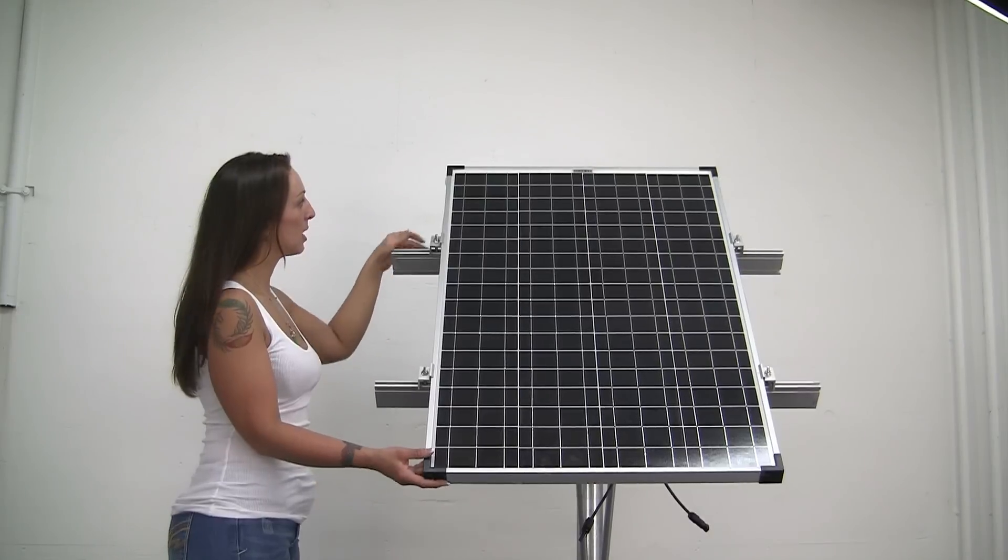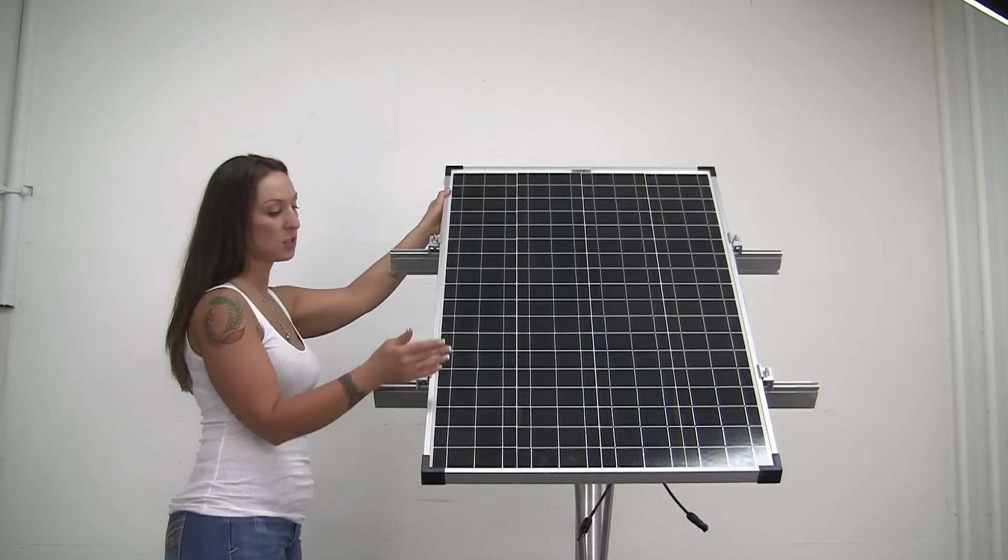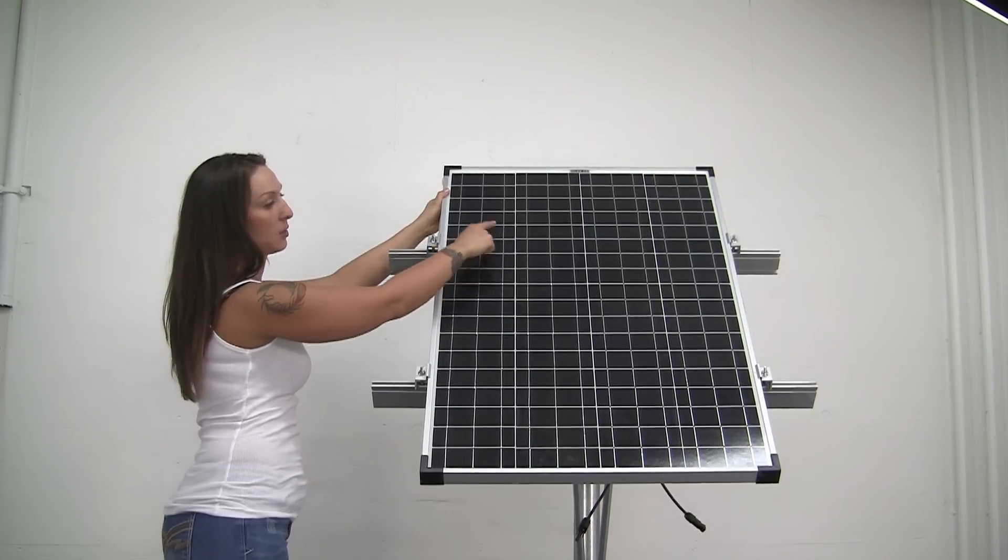Okay guys, when you're mounting up your solar panel, the easiest way to get it all lined up on there is just to use the actual lines on the panel, lining up your clamps.